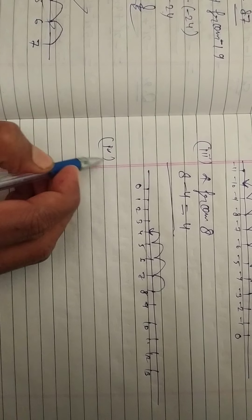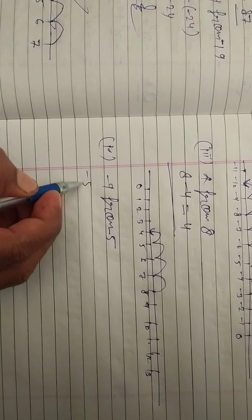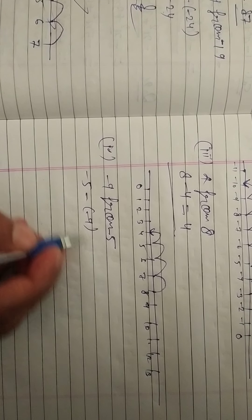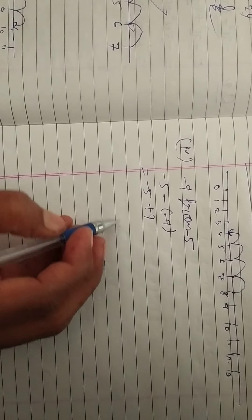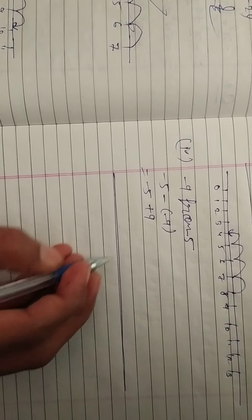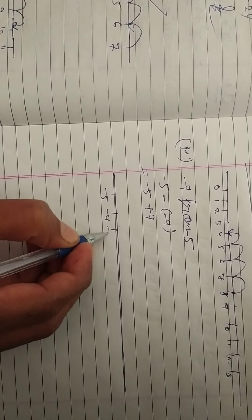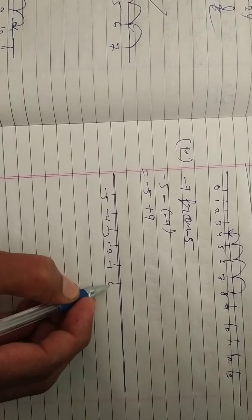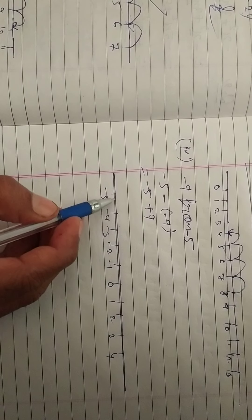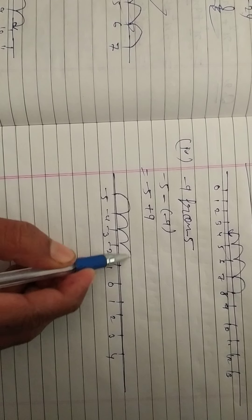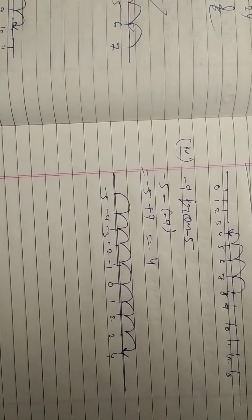Question number 4, minus 9 from 5, minus 5. Minus 5 is here. Minus 5, minus 4, minus 3, minus 2, minus 1. Minus 9.